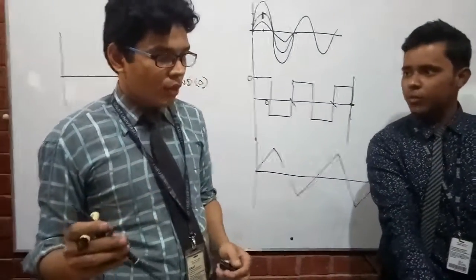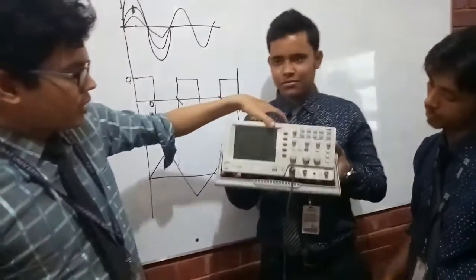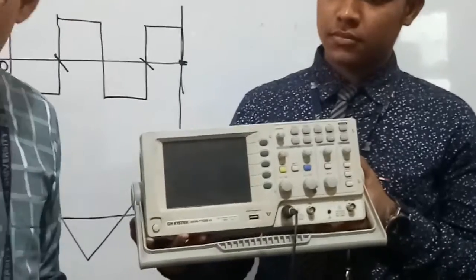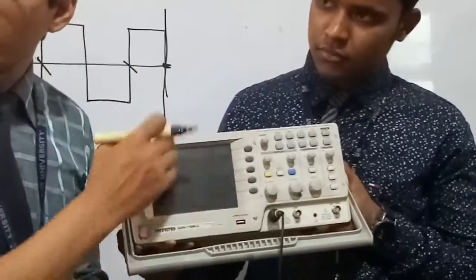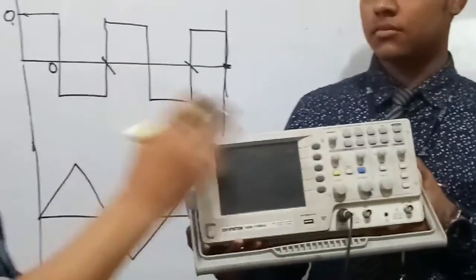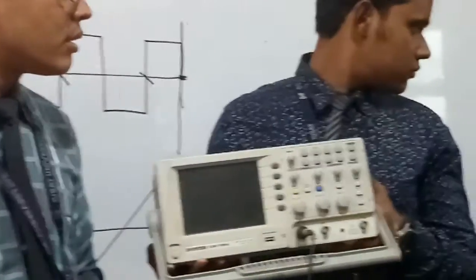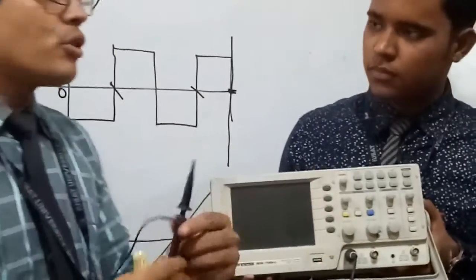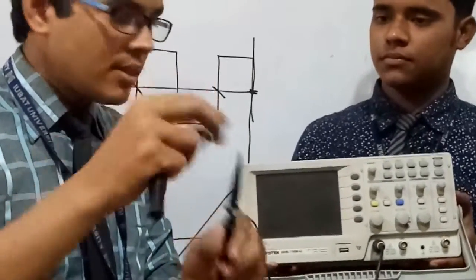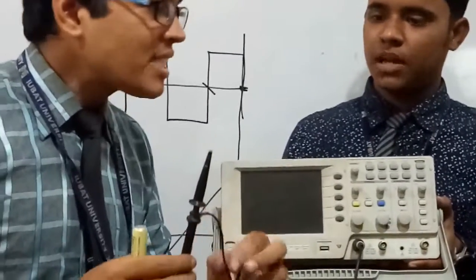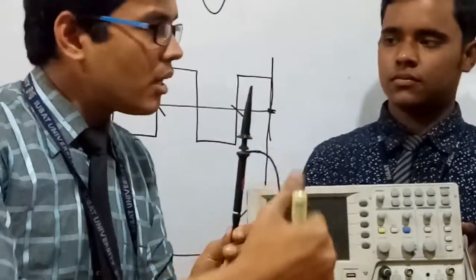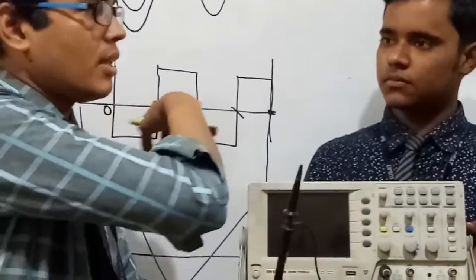The oscilloscope has another port as well. This second port gives you another option of connecting another feeder so you can show both input and output together on the screen at the same time. On this screen you would see the different wave shapes. This is the scope feeder — we are feeding the signal in here and that signal is displayed on screen.